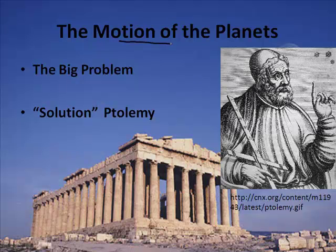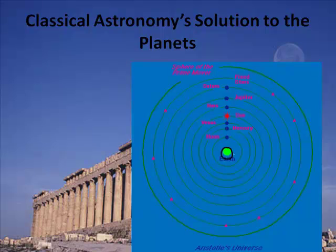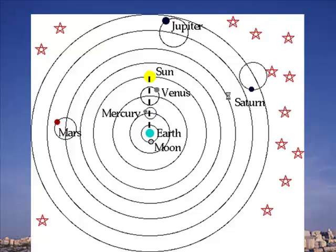Let's change gears: the motion of planets — copy this down. The big problem with classical astronomers was trying to figure out what's up with the planets. They were trying to figure out the arrangement of planets and stars, and planets screwed them up because of retrograde motion. Ptolemy came up with a solution — he got it wrong, but it was a pretty impressive idea. He said Earth was the center of the universe, followed by the Moon, Mercury, Venus, the Sun, Mars, etc. Because planets sometimes went backwards, he said they perform epicycles — rotating around a central point even as they orbit Earth.